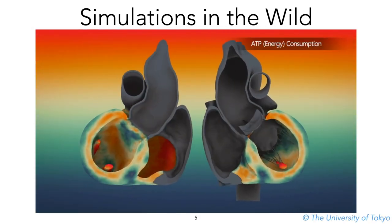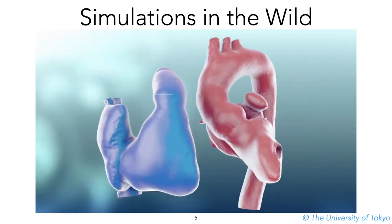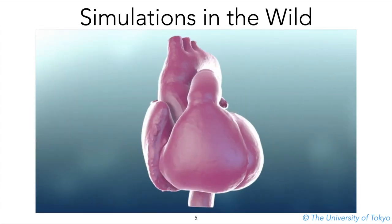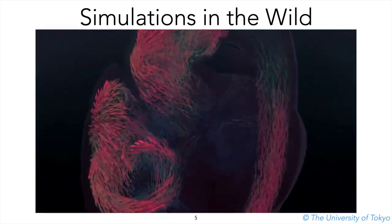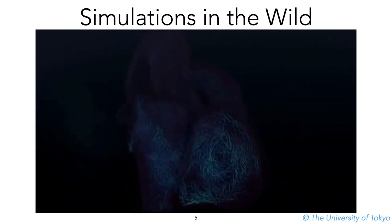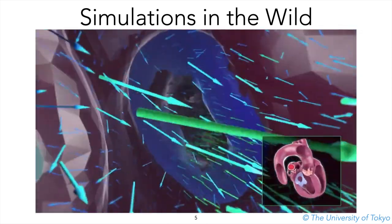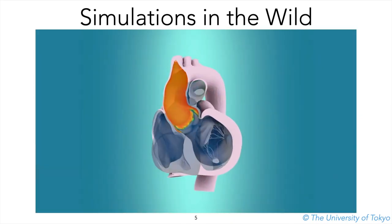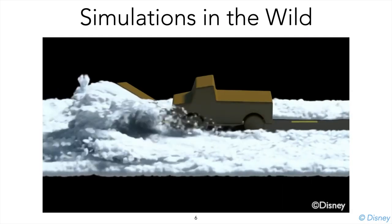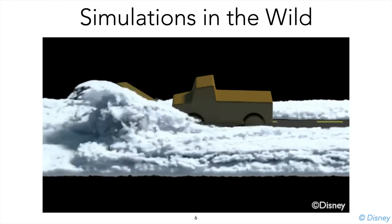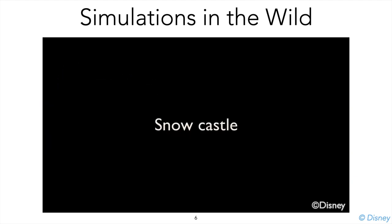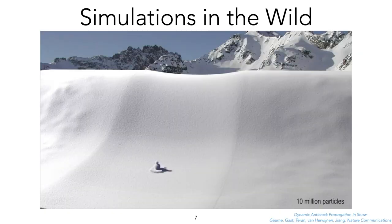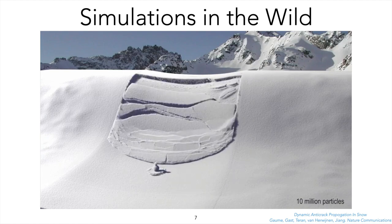A more complex scenario: this is a simulation of a heart that includes simulating the organ and how fluids move. This is a very complex simulation combining deformable objects with fluids, and this kind of approach is starting to be used in the medical field for predictive purposes. In graphics, we use simulation — for example, to simulate how snow moves and interacts with other objects. Another application of snow simulation is for predicting possible disasters.